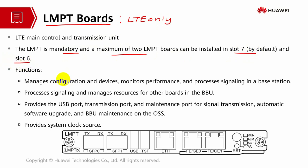The functions of LMPT are similar to UMPT. It manages configuration and devices, monitors performance and signaling, and manages the resources of other boards in the BBU. It also has a USB port, transmission port, and maintenance port for software upgrades, and provides the system clock source. The USB port is used for local commissioning.